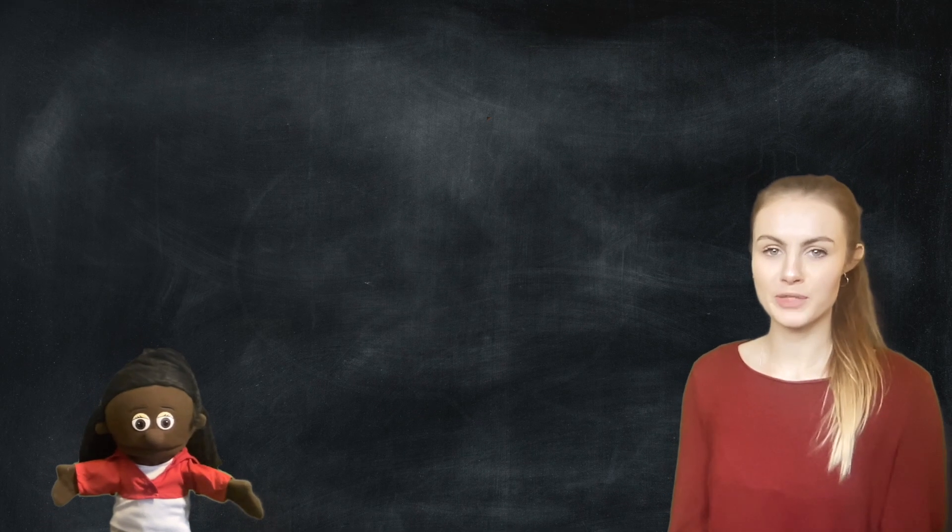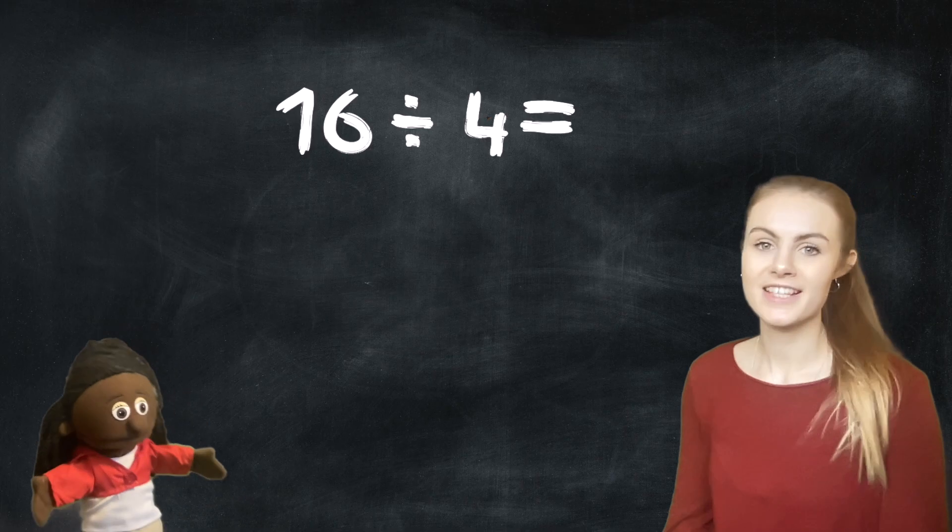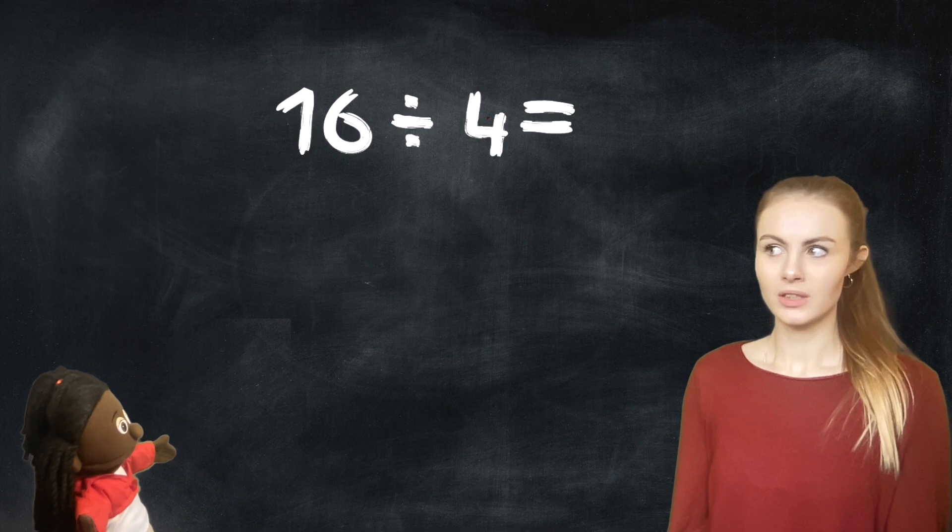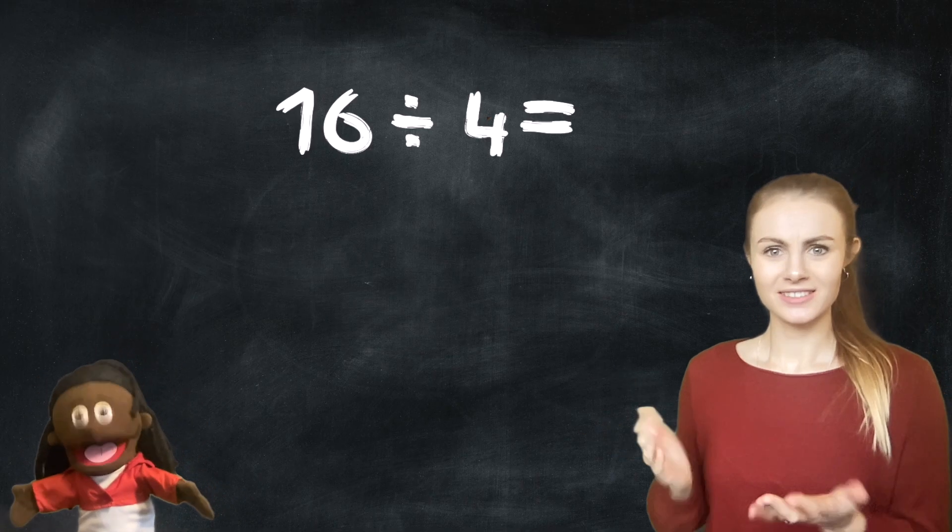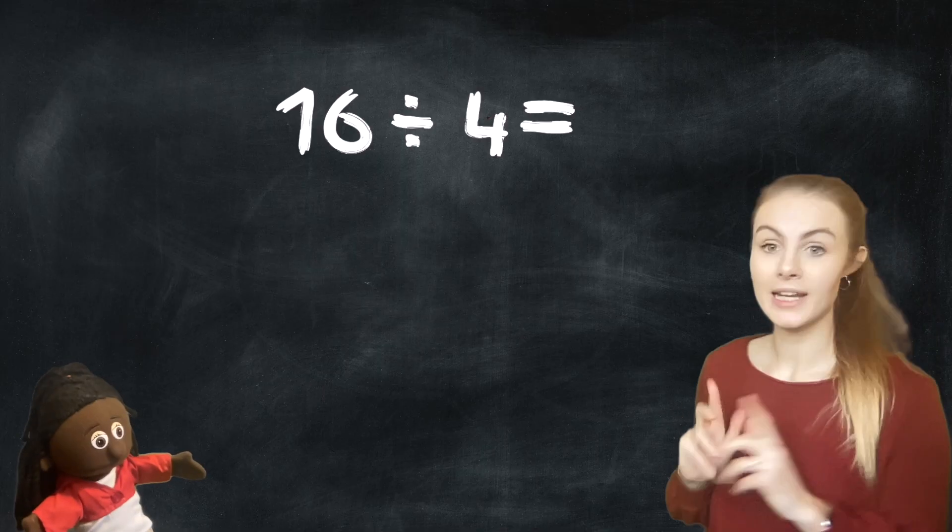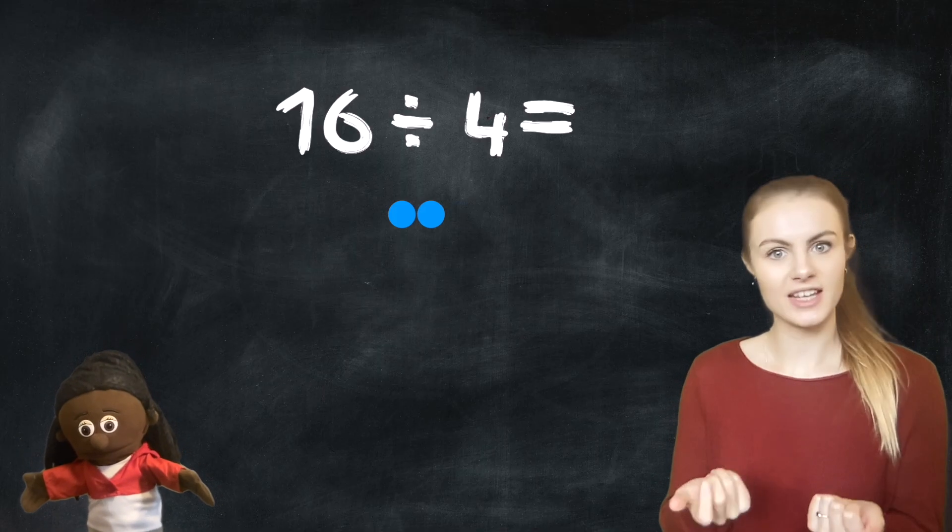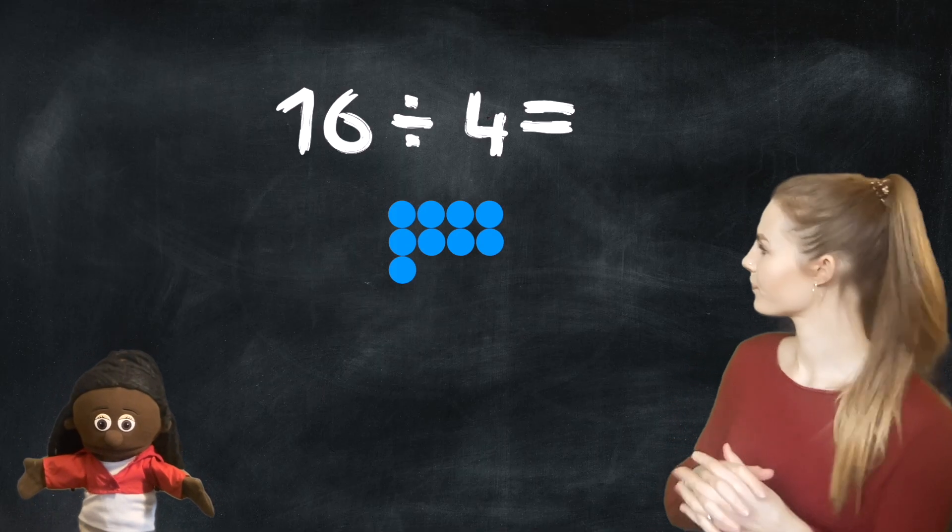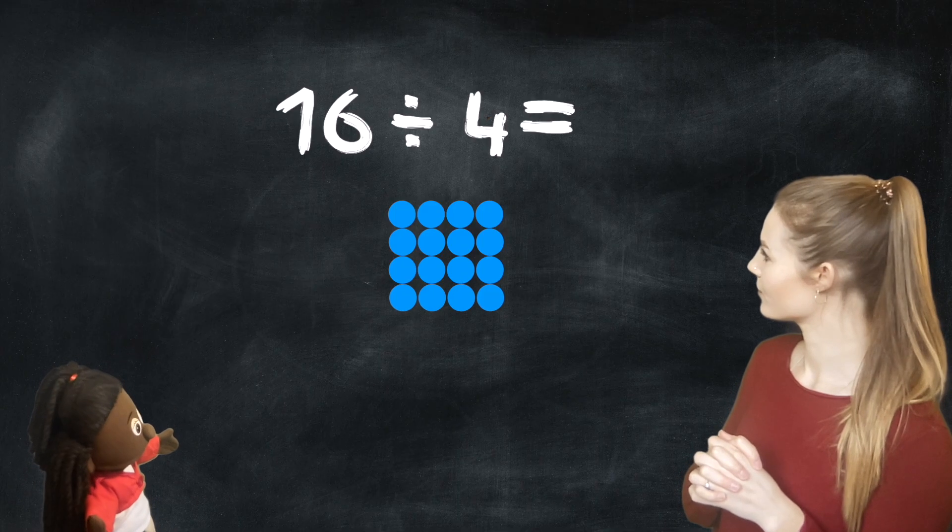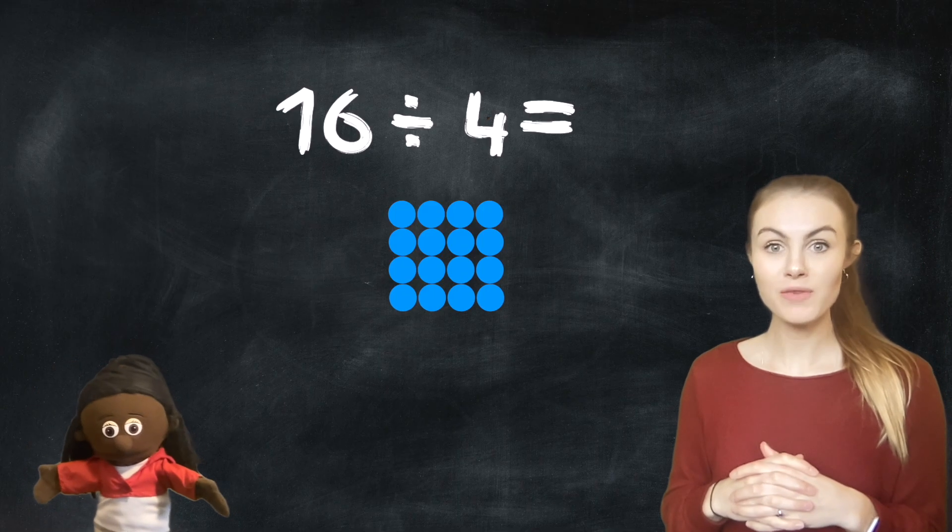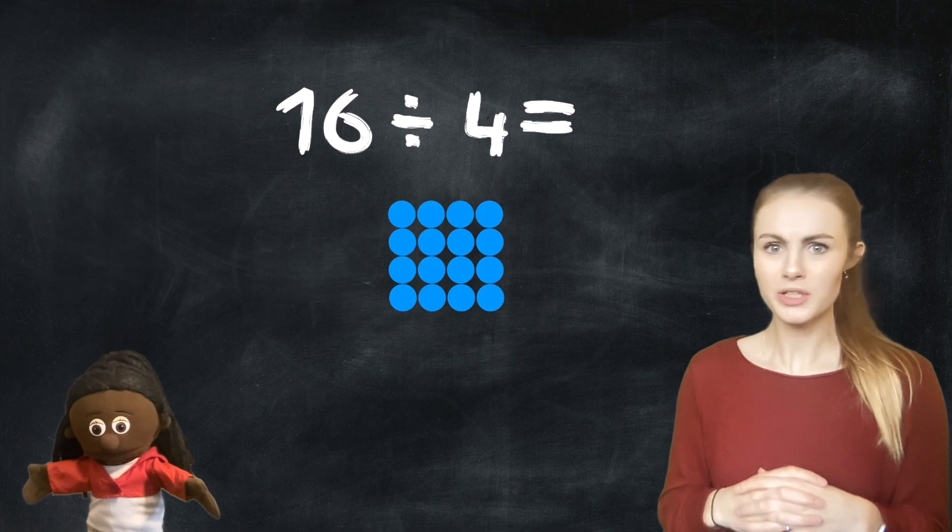Okay Roo, let's look at this problem together. It says 16 divided by 4. Where do we start? You're right, Roo. Let's count out 16 counters or teddies or pencils. Great. So now we've got 16 items. What do we do next, Roo?